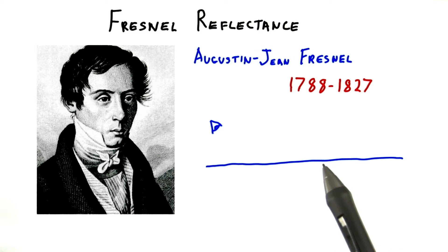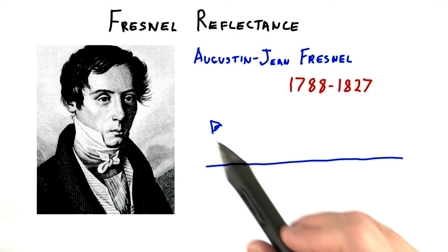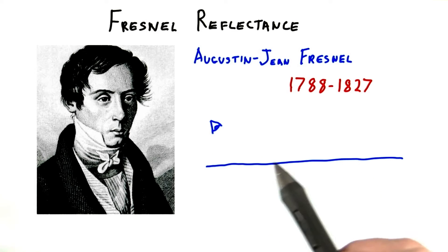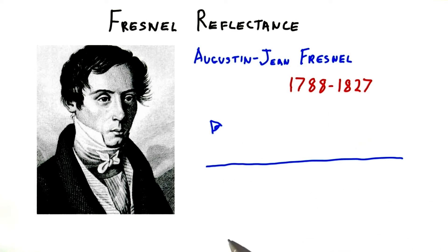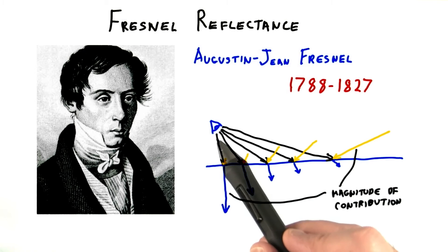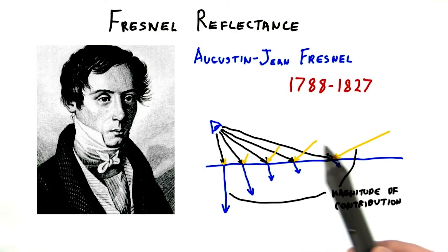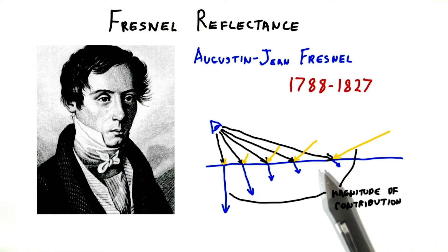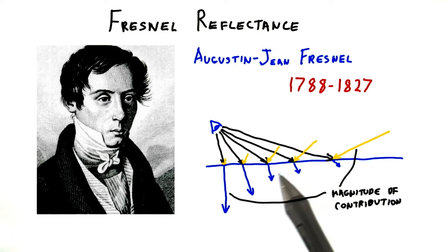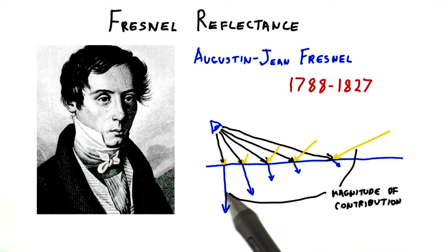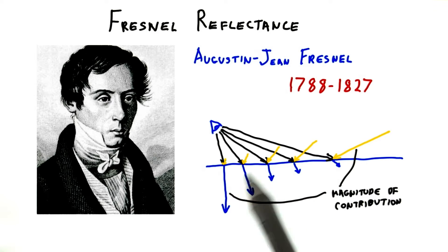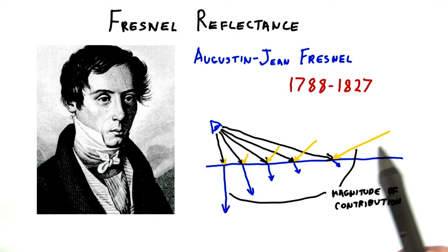The Fresnel equations themselves have to do with the amount of reflection and refraction off a surface. The basic relationship is this: the more on edge you look at a surface, the more reflective it is. If the surface is refractive — in other words, transparent — the amount of light transmitted will drop off considerably as you approach this shallow angle.